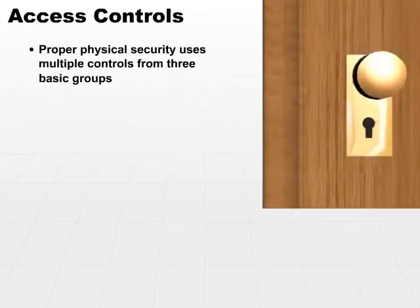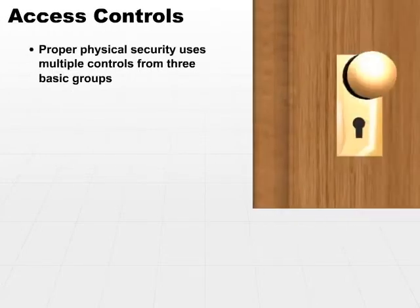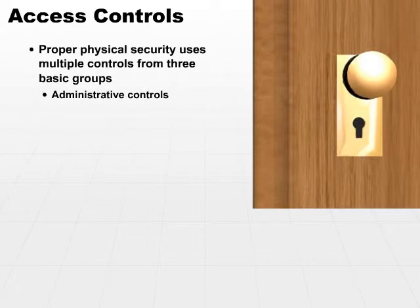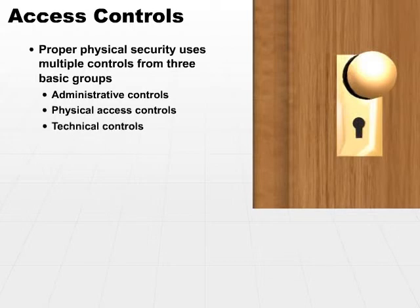Proper physical security will use multiple controls from these three basic groups. Let's review the three basic groups: we have administrative controls, we have physical access controls, and last but not least, we have our technical controls.